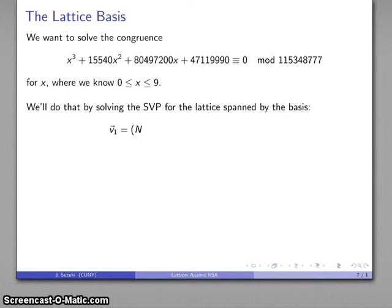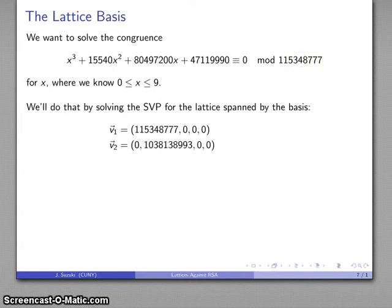That lattice is going to have basis vectors. First vector is going to be the modulus n with all zeros after that. Second basis vector: zero, maximum times the modulus, and then zeros in the remaining places.